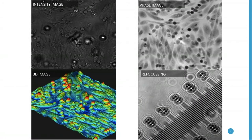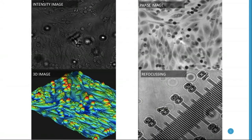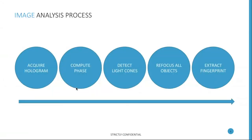So all cells that we image — we are quite sure the analysis will be done properly because all cells will be in focus. The analysis is a five-step process. It starts with the acquisition of the hologram, and after acquisition there is a computation phase. The computation phase is important to be able to detect the light cones.